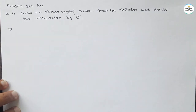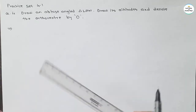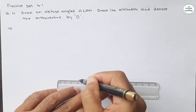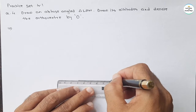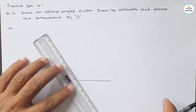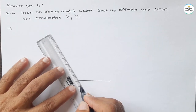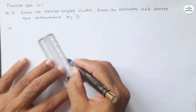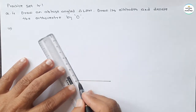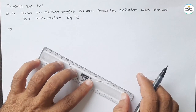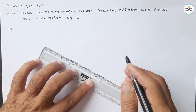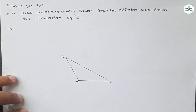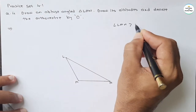Take the base of four centimeters, five centimeters, then draw one angle which is more than 90 degrees. Take this four centimeter line — this angle is more than 90 degrees — and join these three points. Name them L, M, N. This triangle is obtuse because angle LMN is greater than 90 degrees.